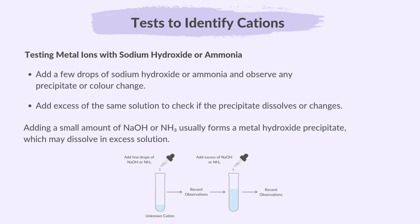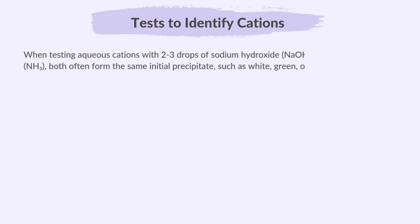Adding a small amount of sodium hydroxide or ammonia usually forms a metal hydroxide precipitate, which may dissolve in excess solution. When testing aqueous cations with 2–3 drops of sodium hydroxide or ammonia, both often form the same initial precipitate, such as white, green or brown solids.